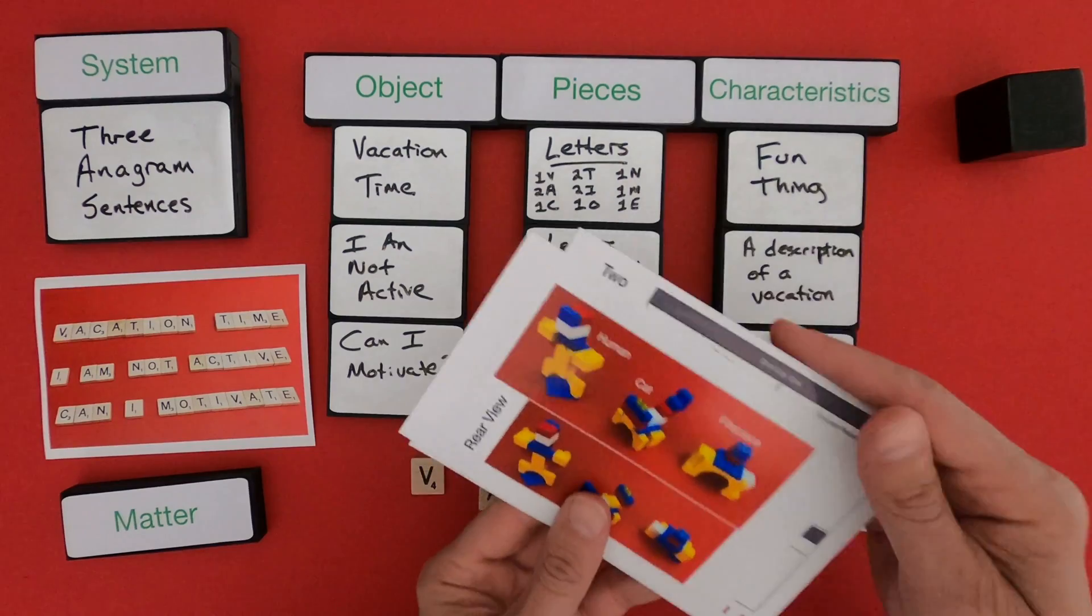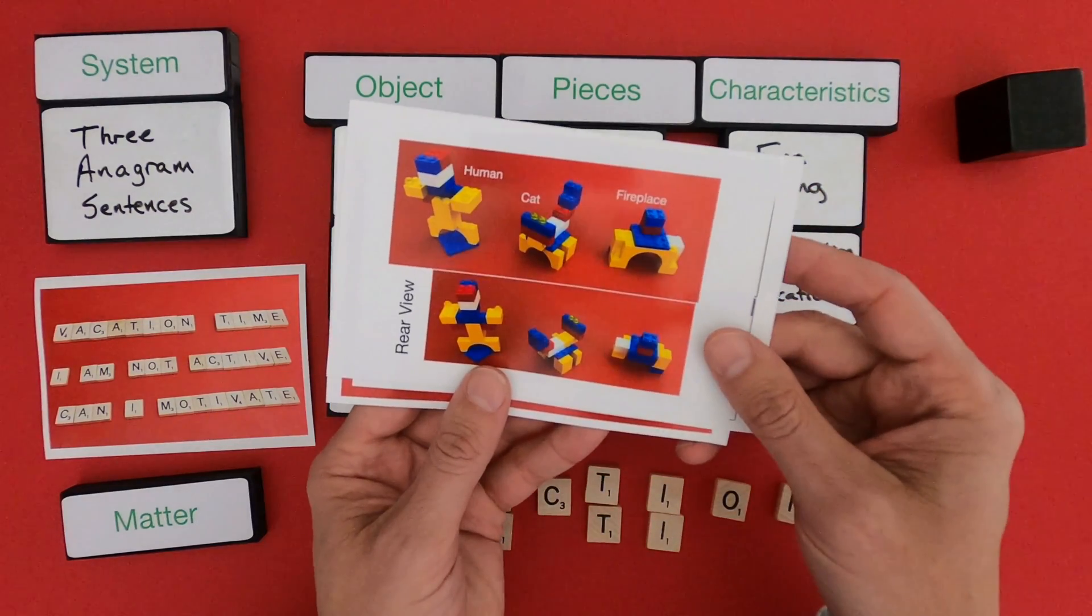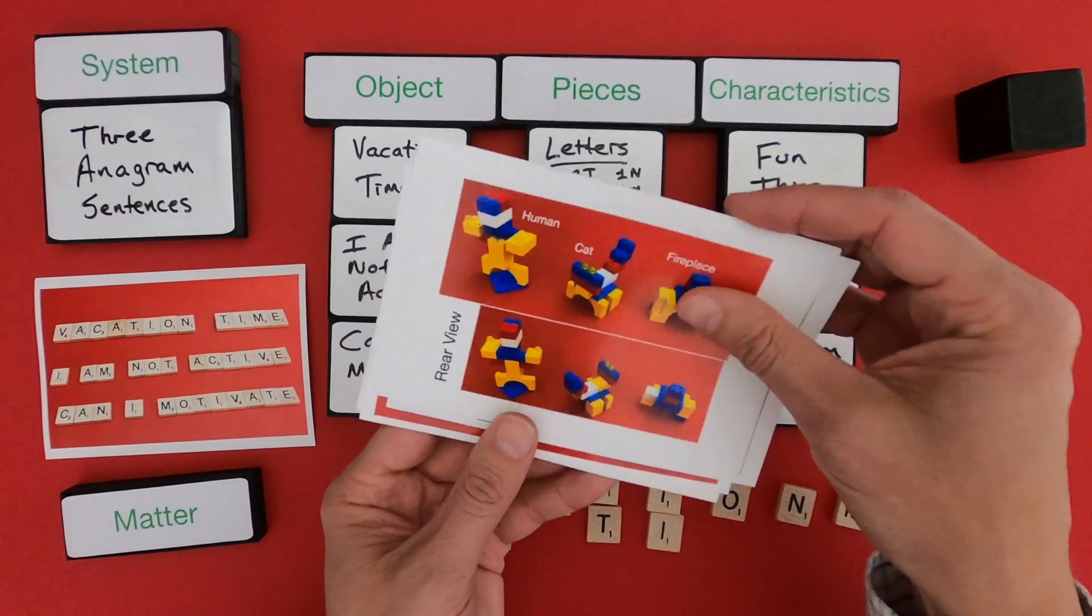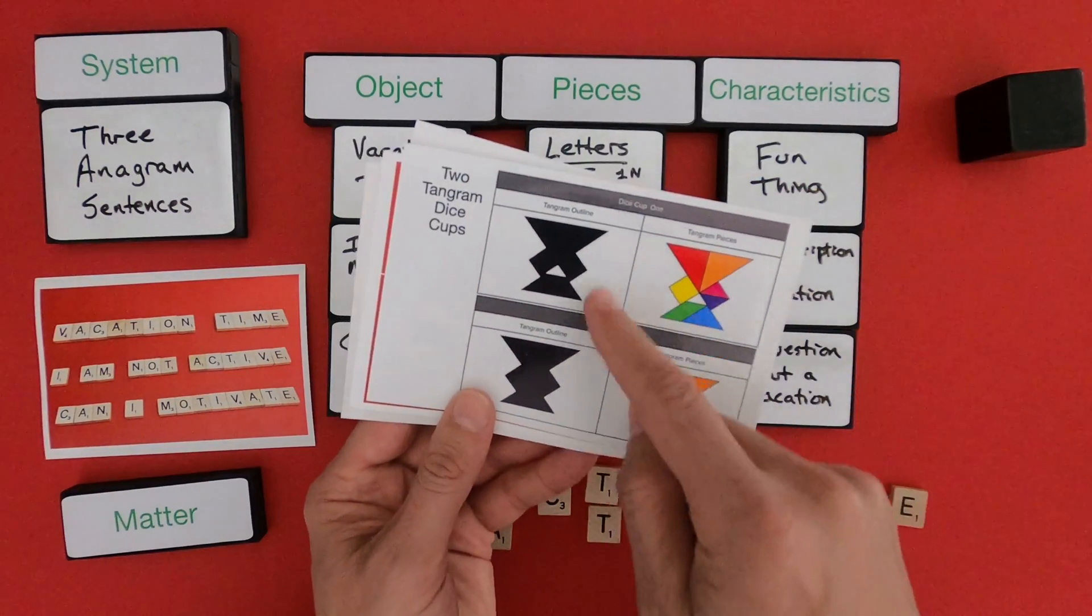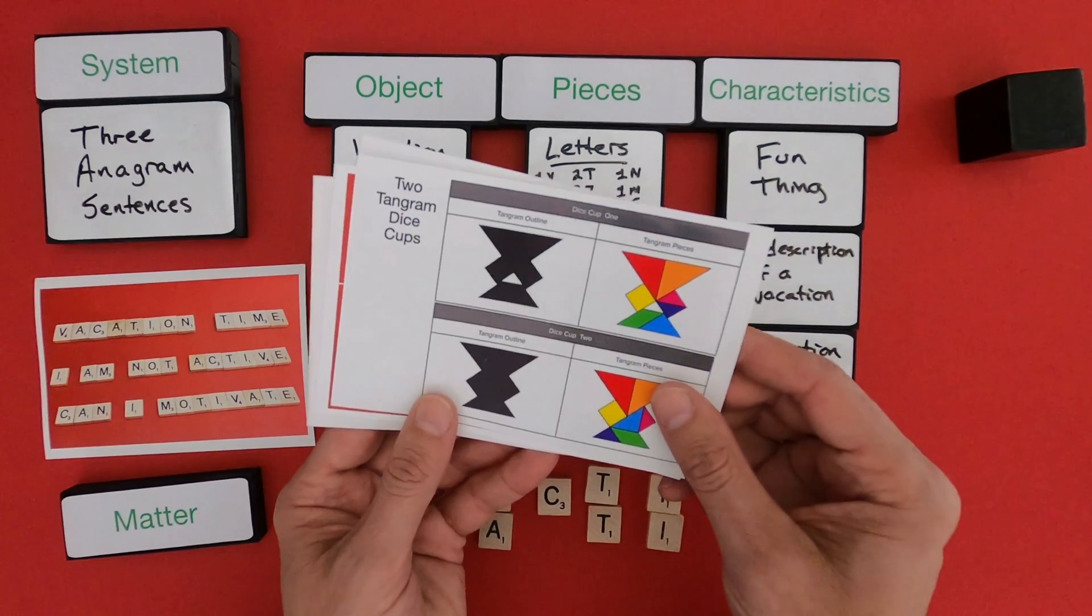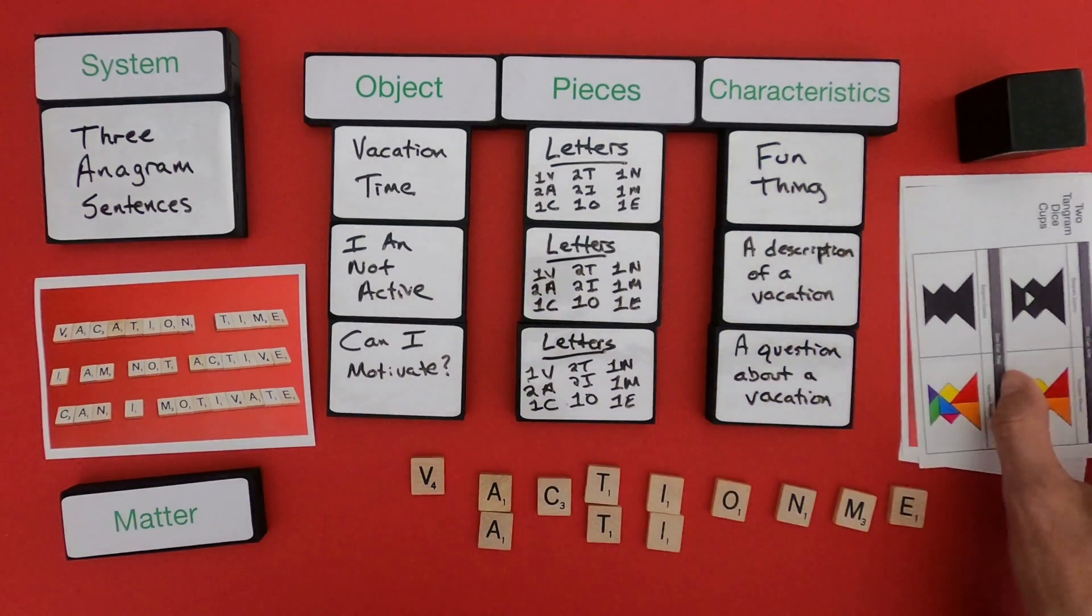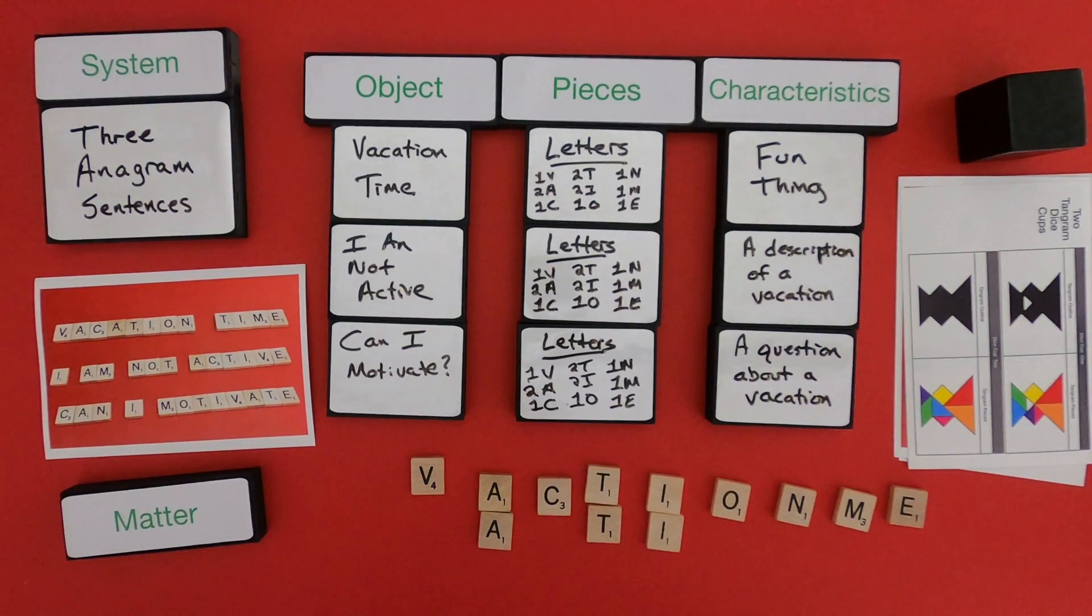So I've done this already on looking at those wooden objects. We've done anagrams together. What you could do next is you could try the same thing. I've got these Lego designs that were made of the same exact Lego pieces, or you could do the same thing, try and determine if these are the same Lego tangram pieces in these dice cups. So that's Thinking in Matter Level 1, Objects and Pieces, and I hope that was helpful.